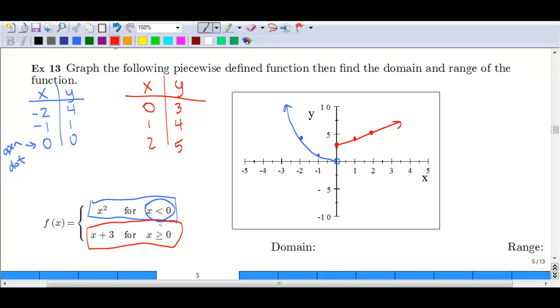Otherwise, we don't have a function. It won't pass the vertical line test because you'll be drawing a vertical line and hitting the graph twice. So I don't want to see anybody trying to do that.